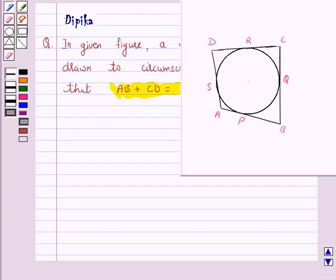Now we know that a tangent to a circle is a line that intersects the circle at only one point. So let's start the solution.